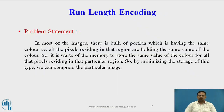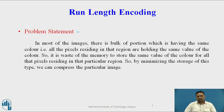The problem statement is: in most images there is a bulk portion having the same color — all pixels residing in a region hold the same color value. It is a waste of memory to store this same color value for all pixels in that region. By minimizing this type of storage, we can compress the particular image.